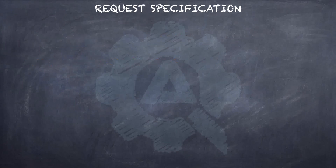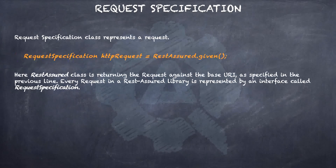Now that we have grown familiar with the Rest Assured class, we move on to our next class — the RequestSpecification class. The RequestSpecification class represents a request. The Rest Assured class returns the request against the base URI as specified. Every request in the Rest Assured library is represented by an interface called RequestSpecification. This interface allows you to modify the request, like adding headers or adding authentication details. The word 'specification' signifies how the request should look when it is sent to the server.